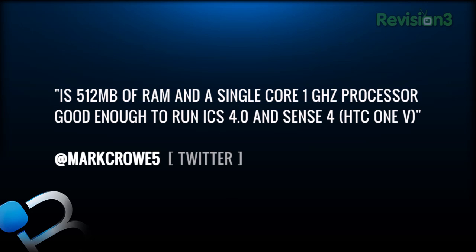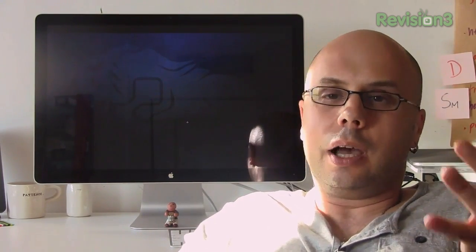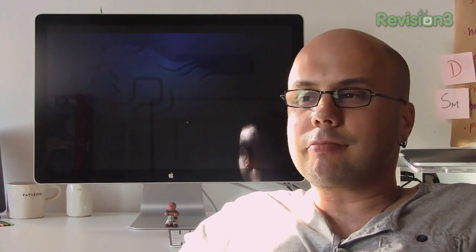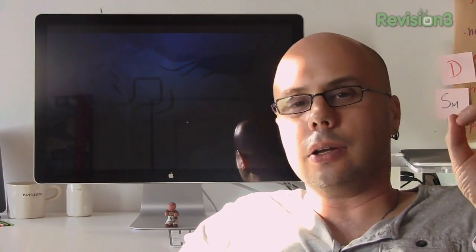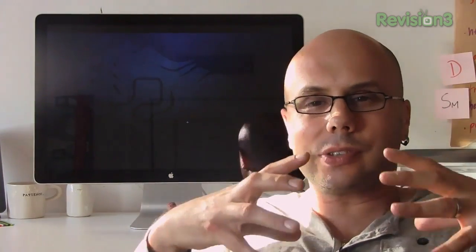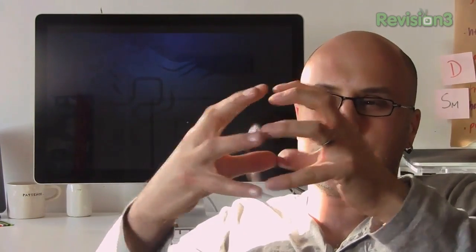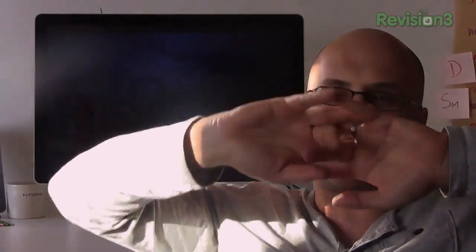From Twitter, Mark Crow asks: is 512 megabytes of RAM and a single-core 1GHz processor good enough to run Ice Cream Sandwich 4.0 and Sense 4 — aka the HTC One V? As I mentioned with the tablets, it all comes down to how well the code is written. Specs to me are pretty much dead at this point. I know that's not what you want to hear, but it's all a system — it depends on how the software and hardware intermesh.